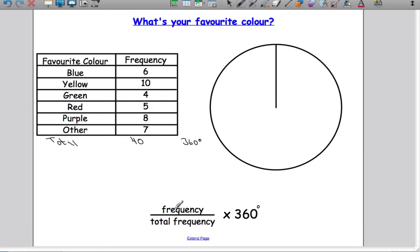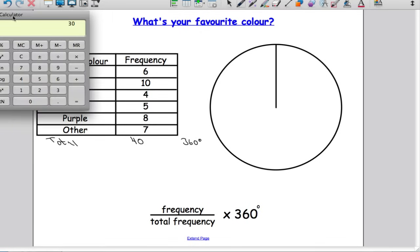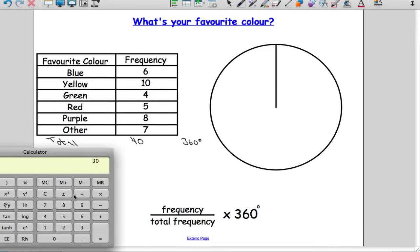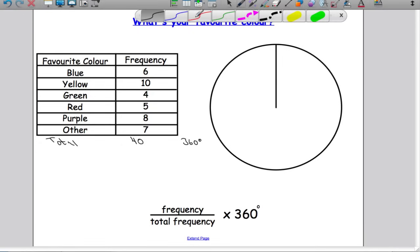In order to do that we need to use this formula: you're going to do the frequency divided by the total frequency and multiply that by 360 degrees. That will tell us how big the angle should be for each slice. Let's do the first one to work out how big the blue slice will be: 6 divided by 40, then multiply our answer by 360 degrees, and we get 54. So 54 degrees of our pie chart will be dedicated to blue.